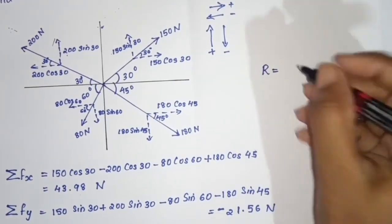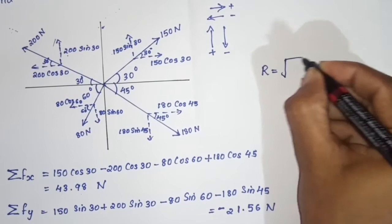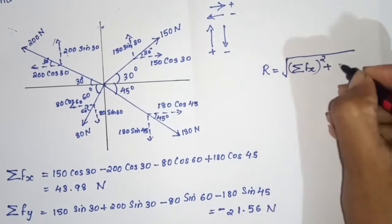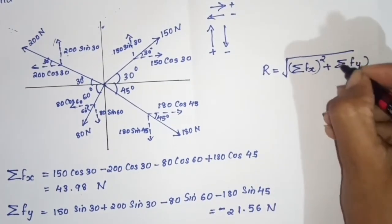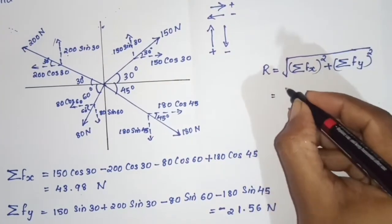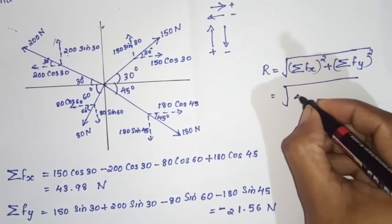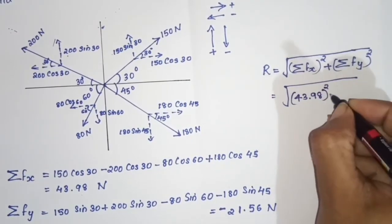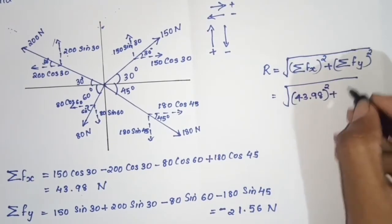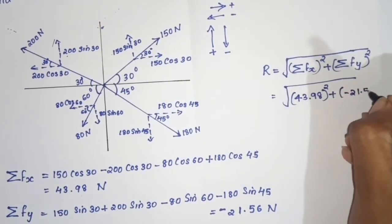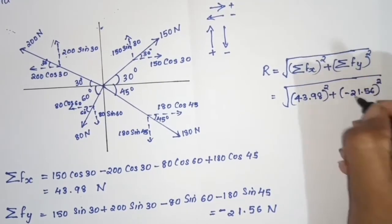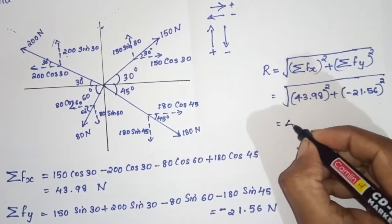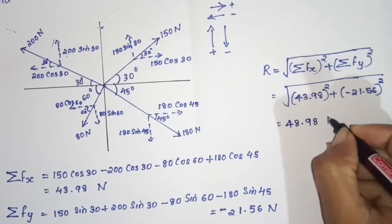The resultant magnitude is calculated using the equation: R equals the square root of sigma Fx squared plus sigma Fy squared. The resultant magnitude is 48.98 Newton.